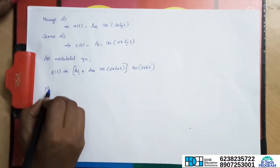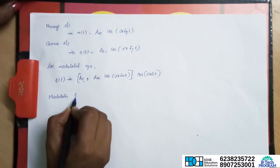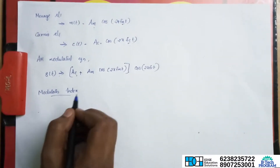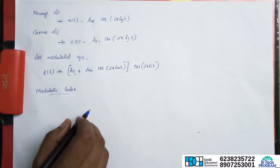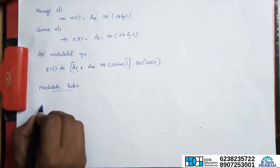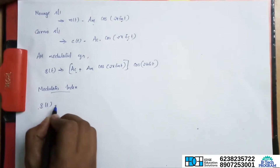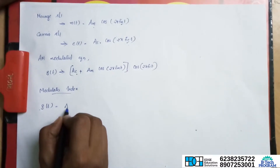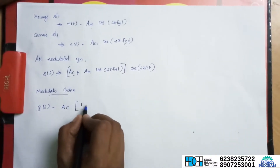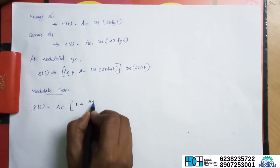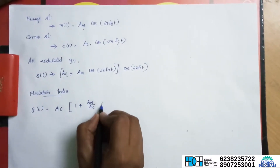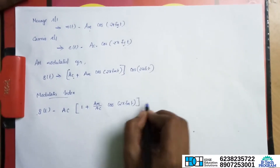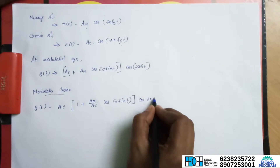Next, the modulation index is introduced, also called modulation depth or percentage of modulation. The signal S of t is equal to Ac into (1 plus Am by Ac cos 2 pi fm t) into cos 2 pi fc t.